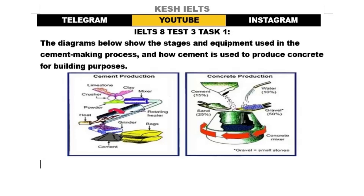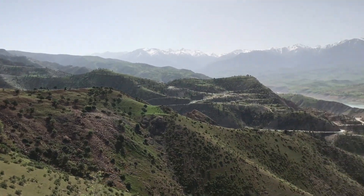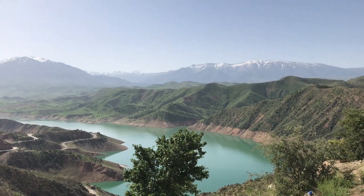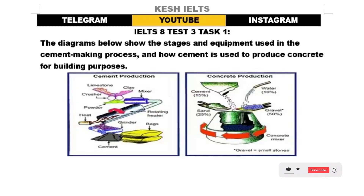What's up! I want to show you how you can do well on your Task 1. This is from IELTS 8, Test 3, Task 1. The diagrams show the stages and equipment used in the cement-making process, and how cement is used to produce concrete for building purposes. It's not really tricky — we have to follow this flow. I'm going to write the first body and the second body. First of all, I'm going to paraphrase the given statement.